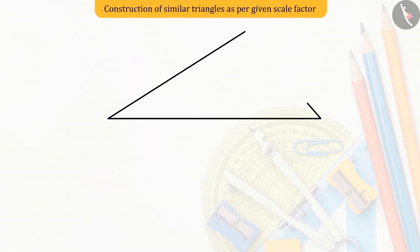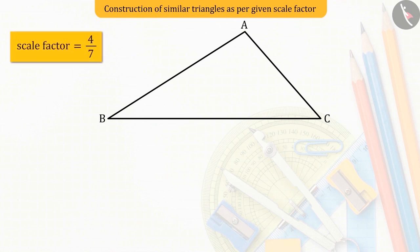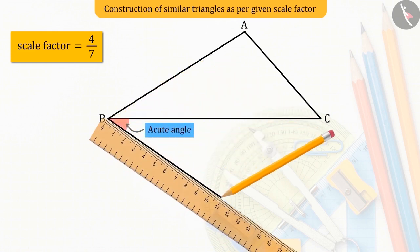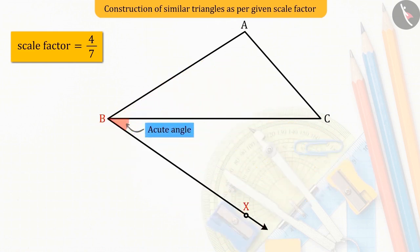Let us construct a triangle similar to the given triangle ABC, whose sides are in the ratio 4 is to 7, that is, the scale factor is 4 upon 7. Let's first draw a ray BX forming an acute angle from the base BC of the triangle, such that it is opposite to the vertex A.